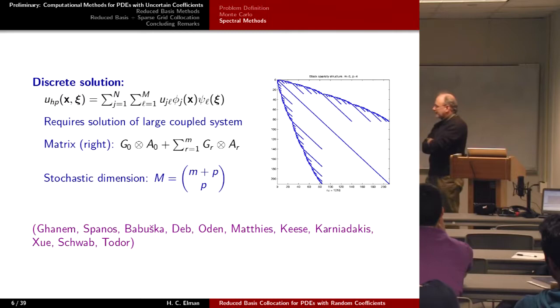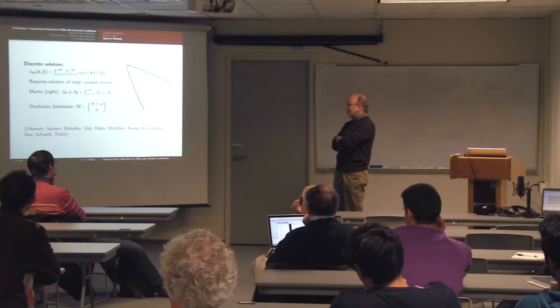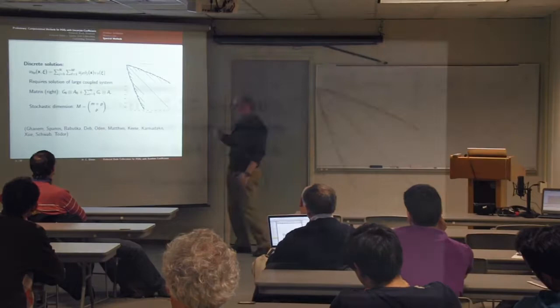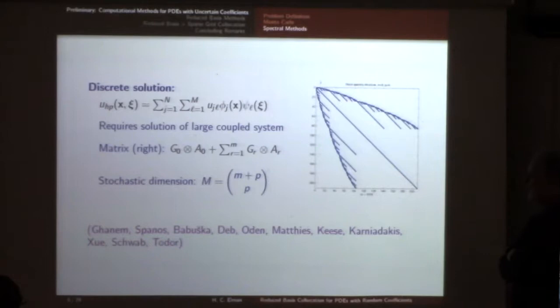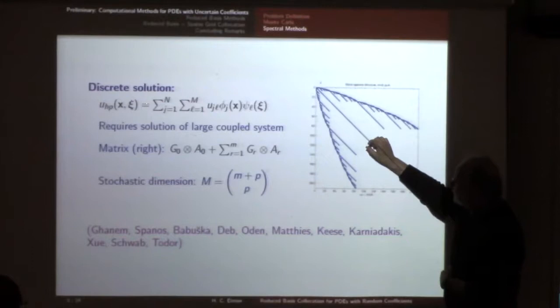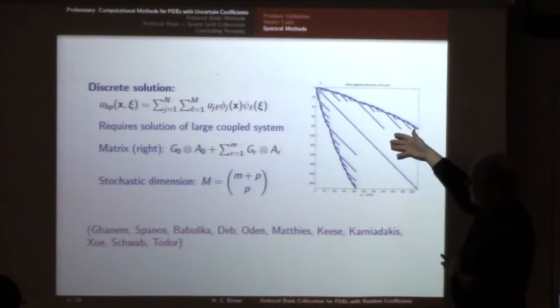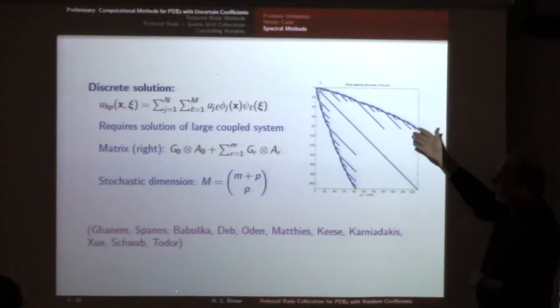Everything described so far is linear, coming from the diffusion equation. We write the discrete solution as a linear combination of product basis functions — products of spatial basis functions and stochastic basis functions. This method has been studied by many people and has been around for approaching 20 years. When first introduced, it had one very negative component: the size of the problem is very big. The coefficient matrix has a hierarchical sparse structure, with each dot corresponding to a block equal in size to the spatial discretization.